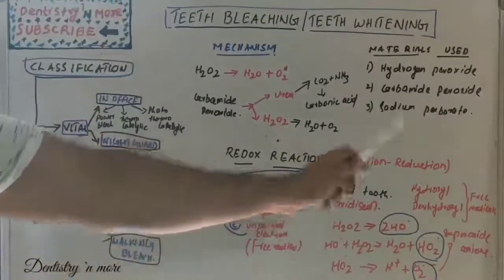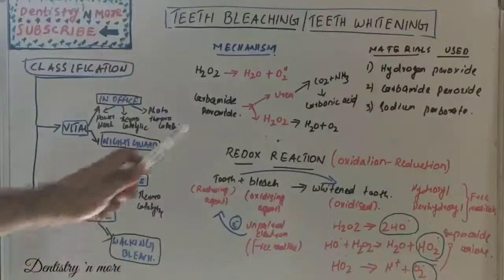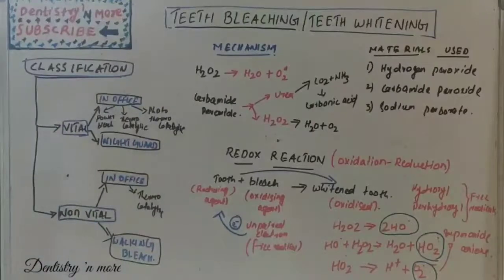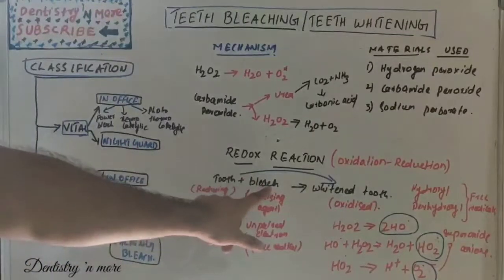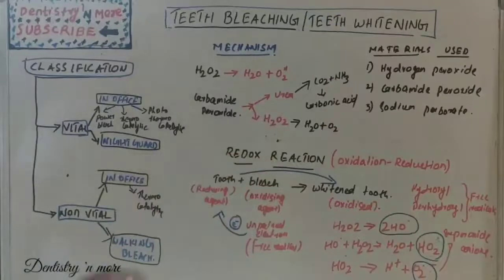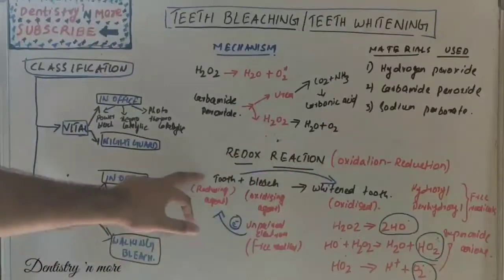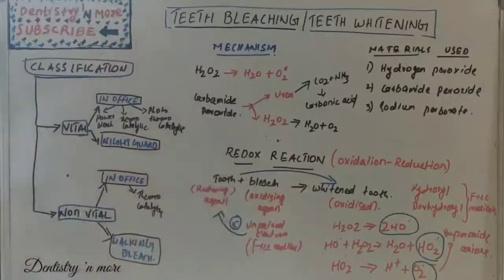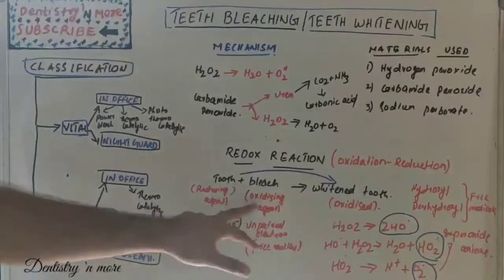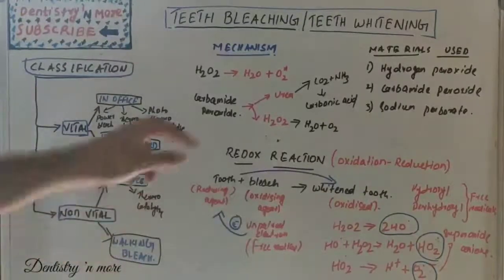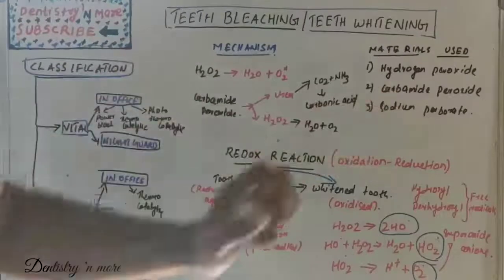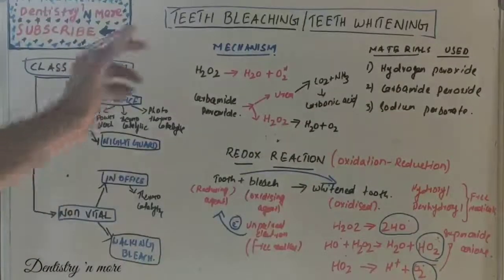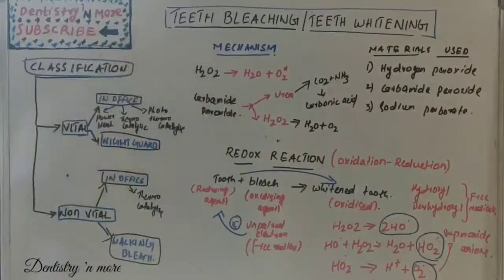Now we need to learn the mechanism of bleaching. It is an oxidation-reduction reaction, known as a redox reaction. The tooth and the bleaching agent undergo a redox reaction — the tooth acts as a reducing agent and the bleach acts as the oxidizing agent.